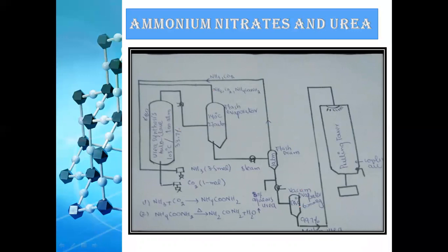After recycling, the solution enters a vacuum evaporator operating at 60 mbar pressure and 135 degrees Celsius, yielding 99.7% molten urea. This molten urea then enters the prilling tower, where it is fed from a bucket at the top and cooling air is introduced, condensing the molten urea into solid prills of urea.